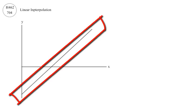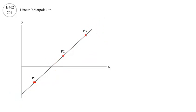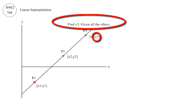Given a linear relationship with three points identified with xy coordinates, find y3 given all the others.